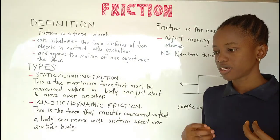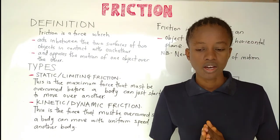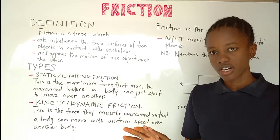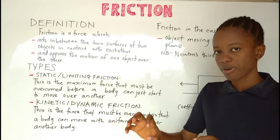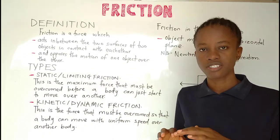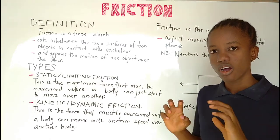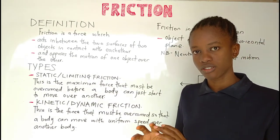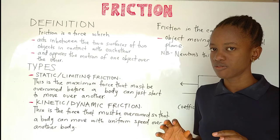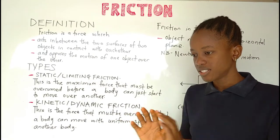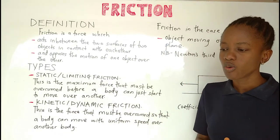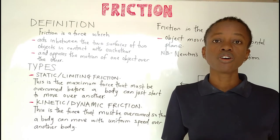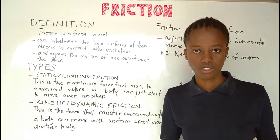Imagine you have an object on your table — say a bag of rice — and you want to move it over the table. You start to apply force, but when you apply some force at first, it doesn't move. So you apply more and more force, increasing it until the bag just begins to move. What you are doing is increasing the force to overcome a certain type of friction known as static or limiting friction.